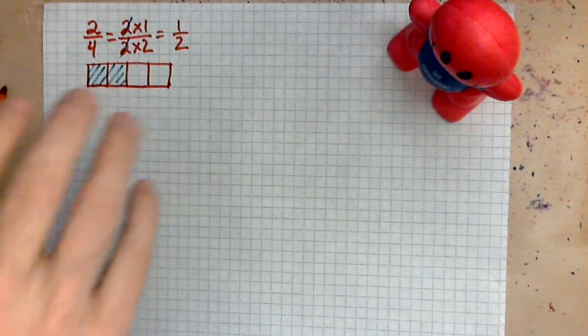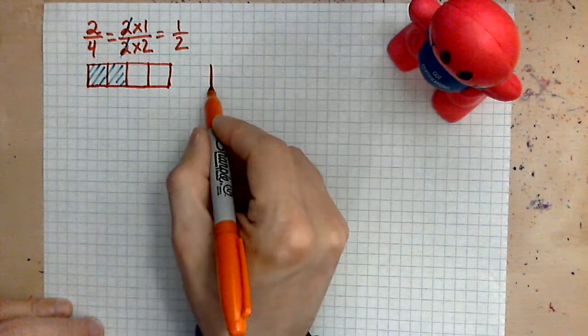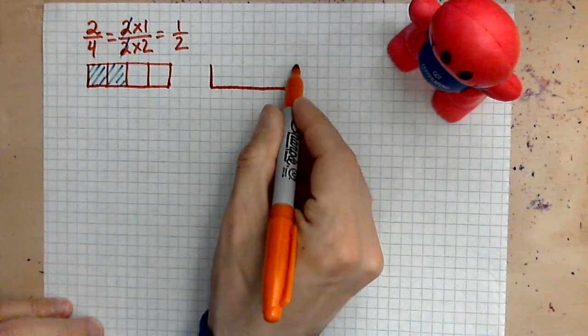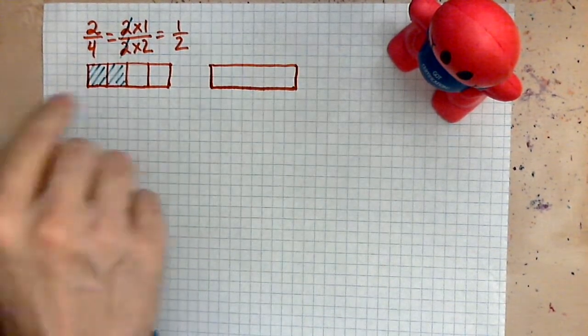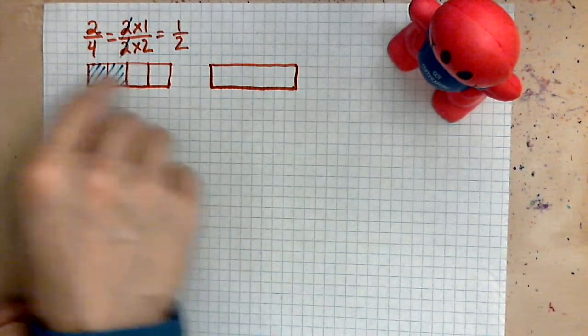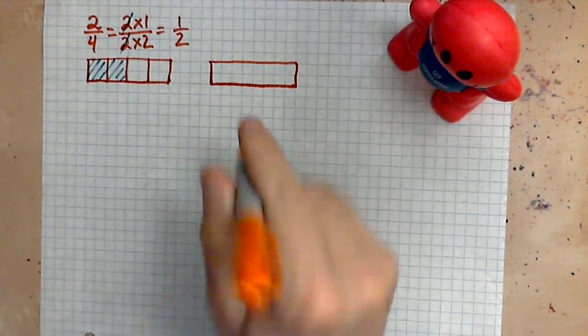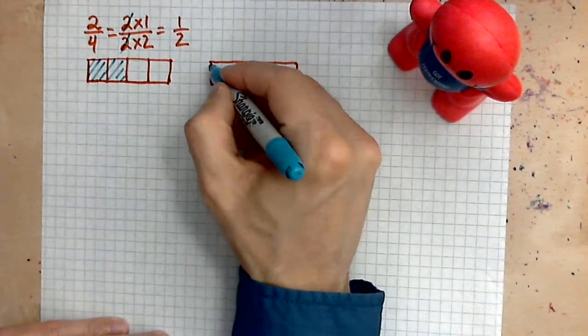And by taking the step of reducing, what we have done is imagine this. We have the same rectangle as before, but the difference is, instead of taking 2 out of 4, we are now taking, more conveniently, 1 out of 2.